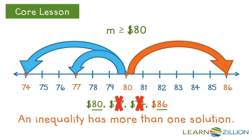Remember, an inequality has more than one solution. In this case, it had two possible solutions out of all of the possible solutions given.